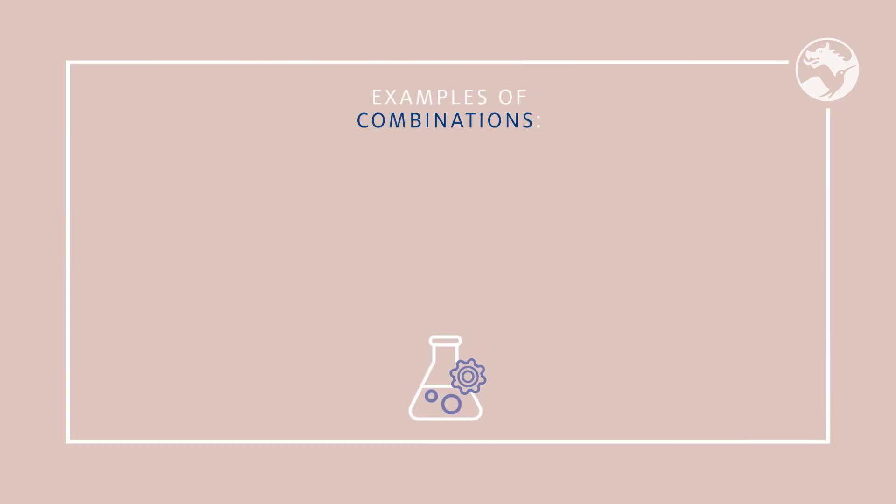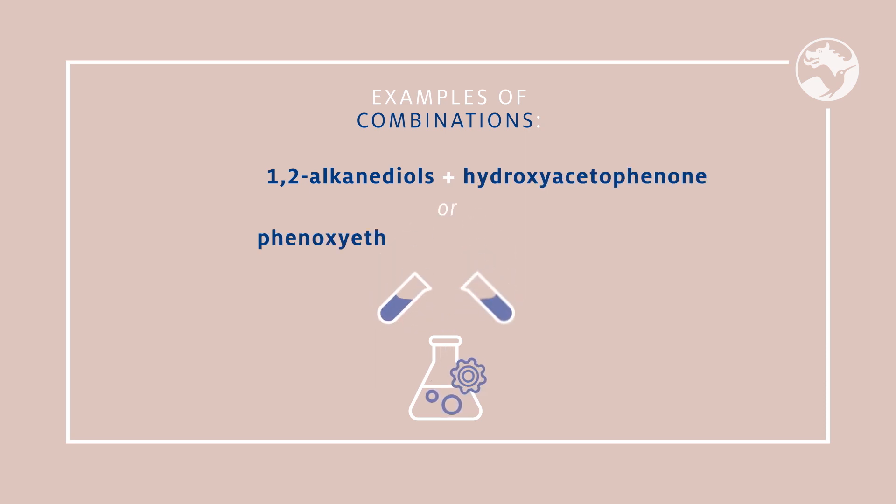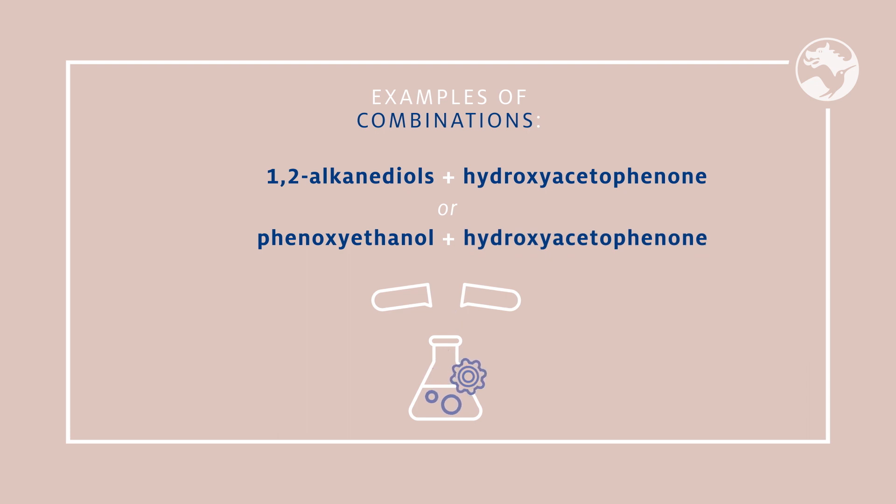It's important to understand how we can formulate with modern product protection ingredients and how they will behave once in a formulation. We want our ingredients of choice to support effective antimicrobial protection. In modern product protection systems, this is best achieved by using combinations of ingredients, since some may be more effective against bacteria while others more against yeast and mold. Examples of such combinations include 1,2-alkanediols with hydroxyacetophenone, or hydroxyacetophenone with tropolone.